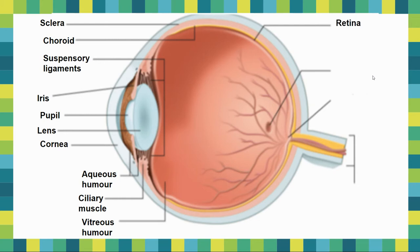On the back side you have your retina, your fovea centralis, your optic disc — or what we call the blind spot — and your optic nerve. Take a moment, pause here and add those into your notes.